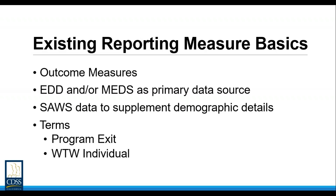These measures help answer questions like: is our funding and program design producing the intended outcomes across all counties? All of these measures utilize EDD and/or MEDS as the primary data source for the calculation. There are several terms used throughout this presentation — first is program exit. For the purposes of Cal-OR, program exit is defined as no member of the assistance unit receiving a CalWORKs cash grant for 90 days. The date of exit is the first day that no member of the AU received a CalWORKs cash grant.